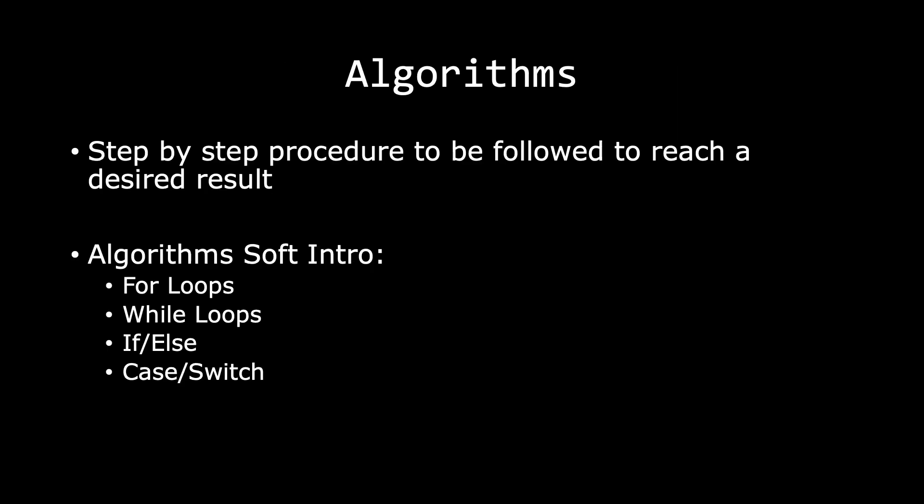Next is algorithms. Algorithms are simply a step-by-step procedure to be followed to reach a desired result. If you followed my courses from the beginning, you were introduced to a few ways that aid us in building algorithms. The most common one is the for loop, which is great when you need to iterate over an entire data set or collection of data. We can use for loops for both dictionaries and arrays. Algorithms don't have to be complex — if you've used a for loop to iterate through an array, then you've already used an algorithm.